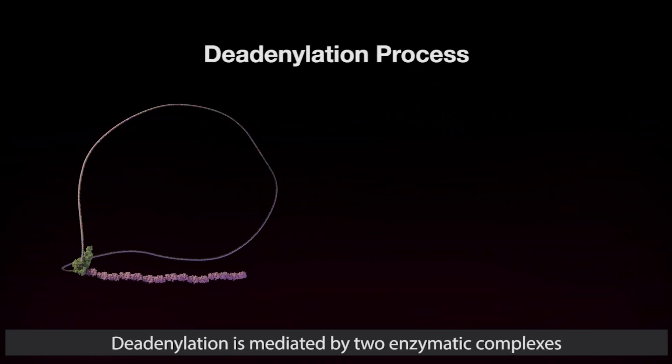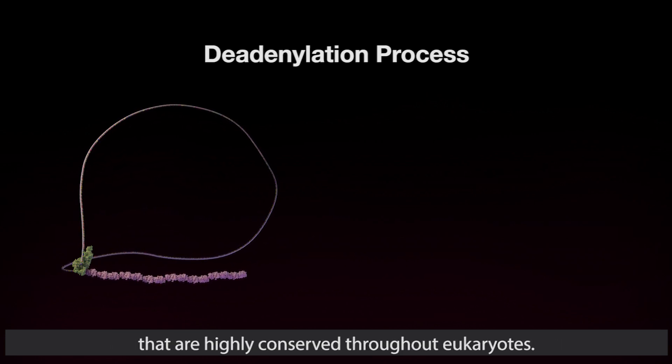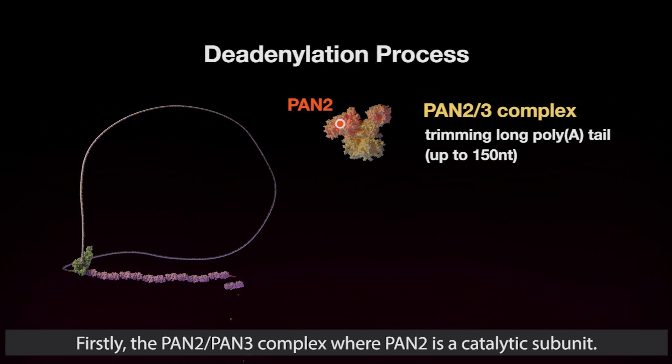Deadenylation is mediated by two enzymatic complexes that are highly conserved throughout eukaryotes. Firstly, the PAN2/PAN3 complex where PAN2 is a catalytic subunit.